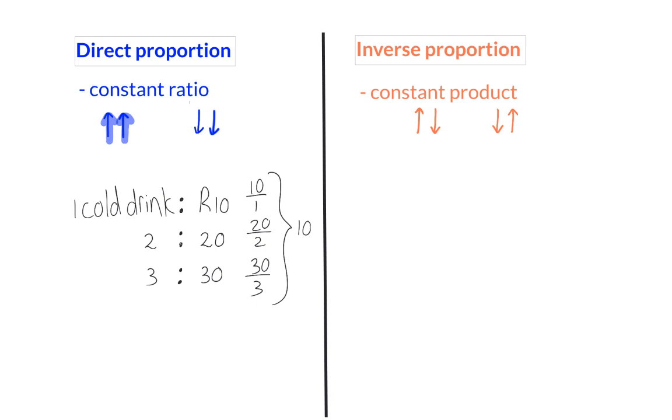That is why we have a constant ratio. If you represent this on a graph, with your number of cold drinks on the x-axis and the amount that you pay on the y-axis, you will see that it is always an increasing straight line graph. A constant ratio means we divide the two values that we are comparing, and every single time we get the same constant ratio.